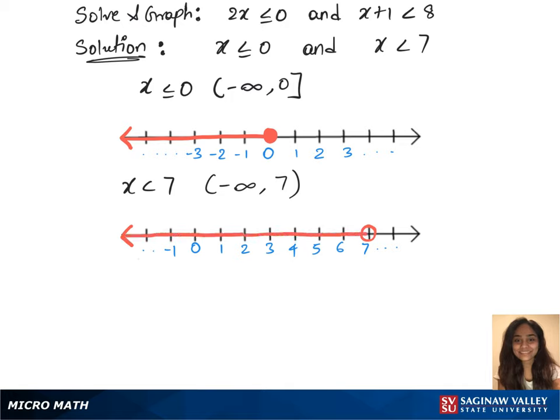Now, we see the intersection between those two graphs, which is x less than or equals to 0 and x less than 7, is x less than or equals to 0. And the solution set for this one is minus infinity to 0. This is our solution.